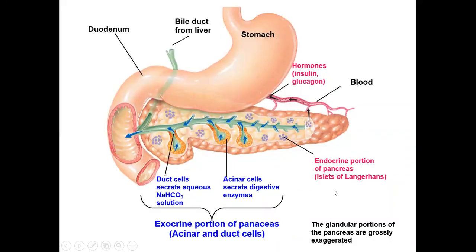The pancreas is both an exocrine and endocrine gland. The endocrine portion is the islets of Langerhans cells, which secrete insulin and glucagon directly to the blood. The exocrine gland secretes into ducts — two secretions: from acinar cells and from ductal cells. The acinar cells secrete pancreatic enzymes, and the ductal cells secrete an aqueous sodium bicarbonate (HCO3) solution. Both exocrine secretions are delivered directly to the duodenum.